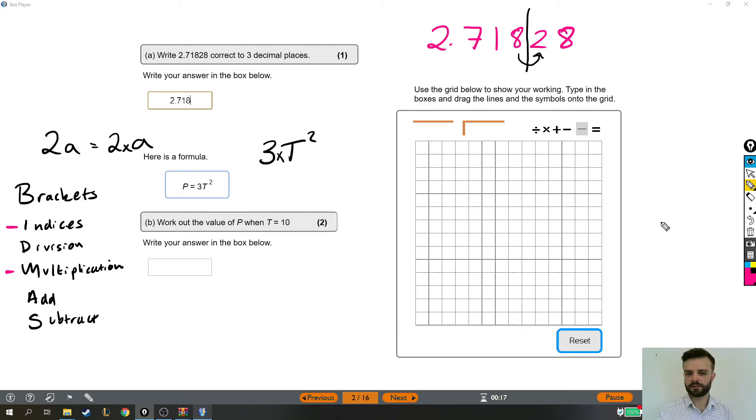So, with that in mind, I think we're ready to actually answer the question. So, 3T squared. Well, the first thing we need to do is the T squared, so that's 10 squared.